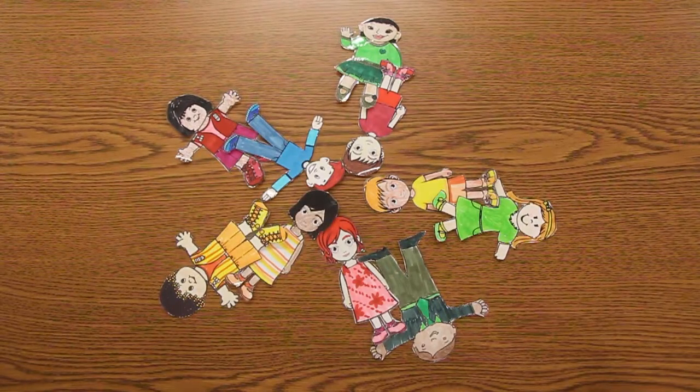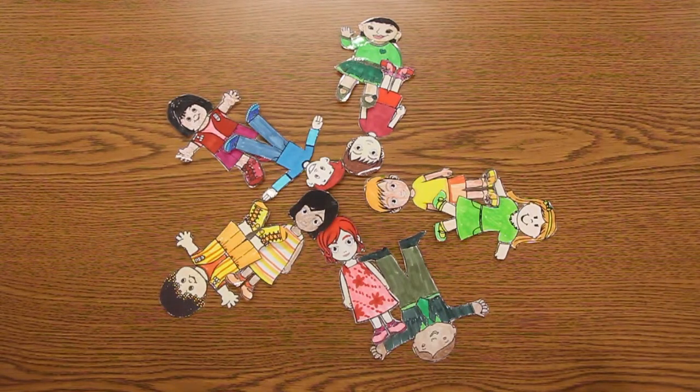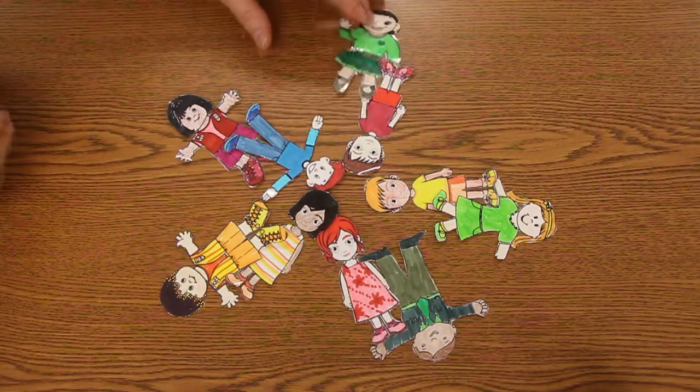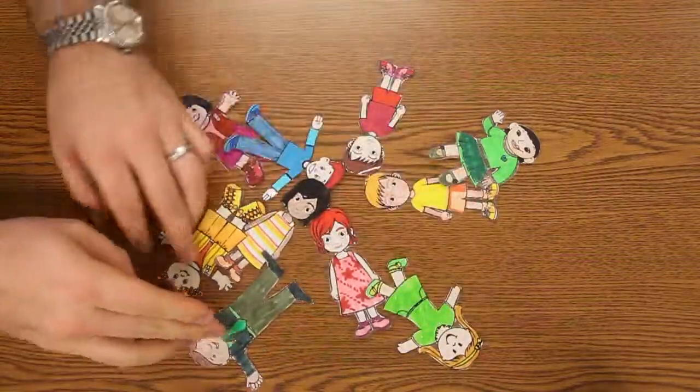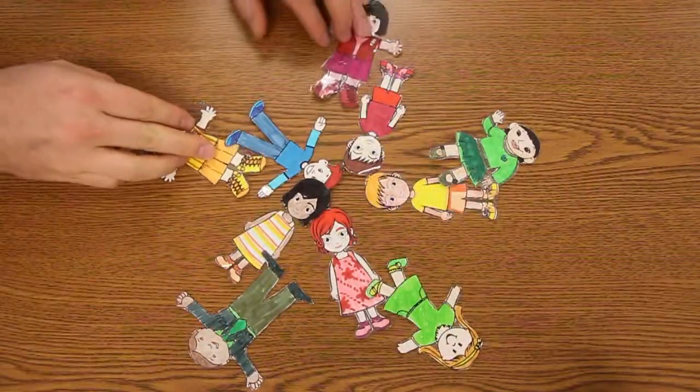The lineup activity becomes an inside-outside circle activity by just changing the shape and how students move. For example, this is how an inside-outside circle activity would work. Also keep in mind a couple examples to be able to use when you close the activity later.